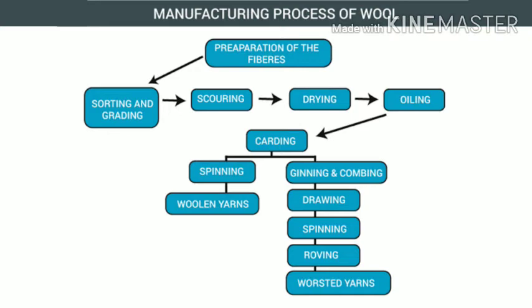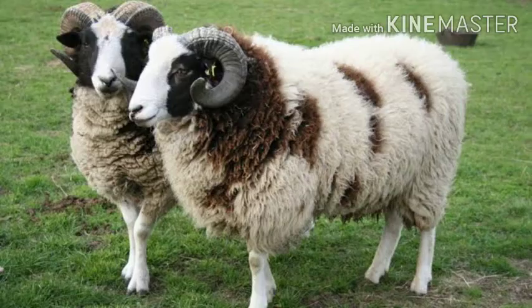The natural fleece or hair of sheep or goats is white, brown, or black in colour. The white woolen fibres obtained by sorting can be dyed in different colours.